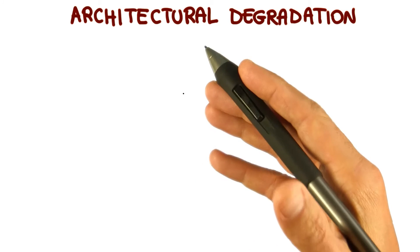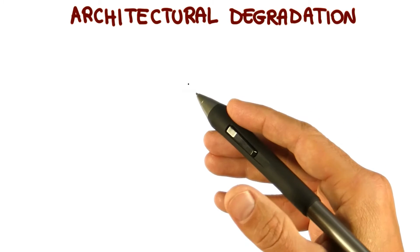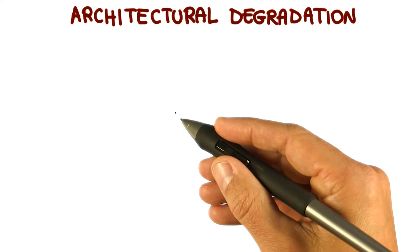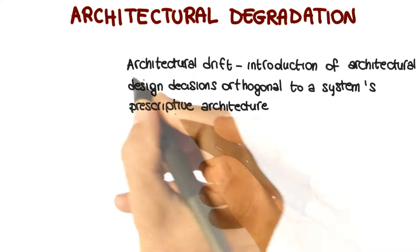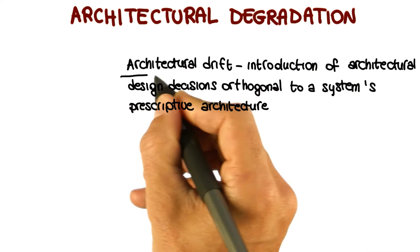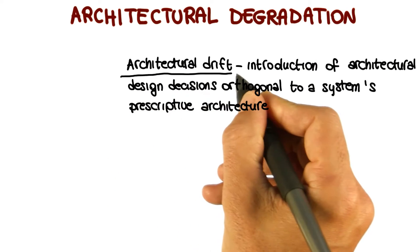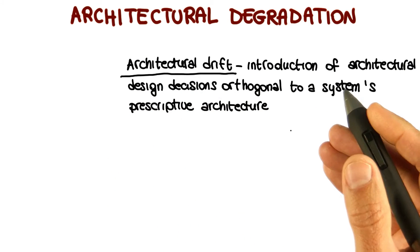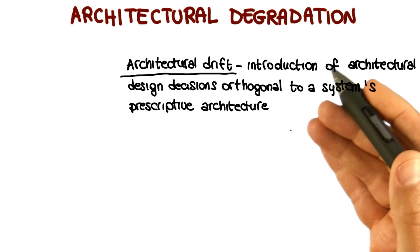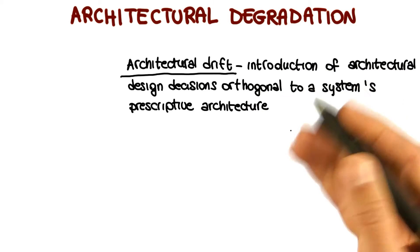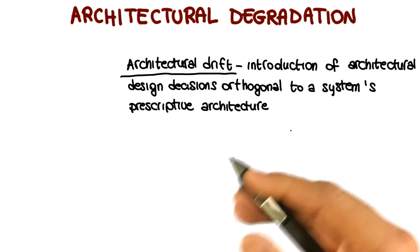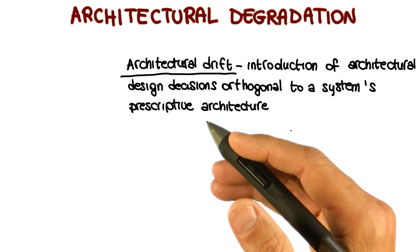There are two important and related concepts that have to do with the way a software architecture evolves. The first one is architectural drift, which is the introduction of architectural design decisions that are orthogonal to a system's prescriptive architecture.